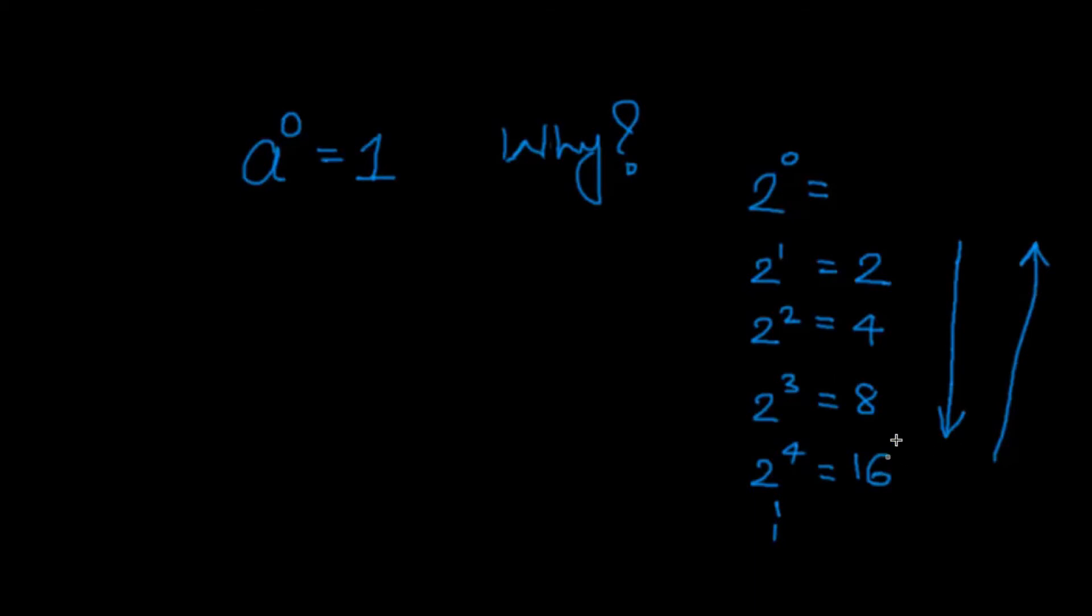So this is 16 and this is 8. What are we doing? We are dividing 16 by 2 to get 8. Fine. Understood. We are dividing here. So here we are dividing by 2.